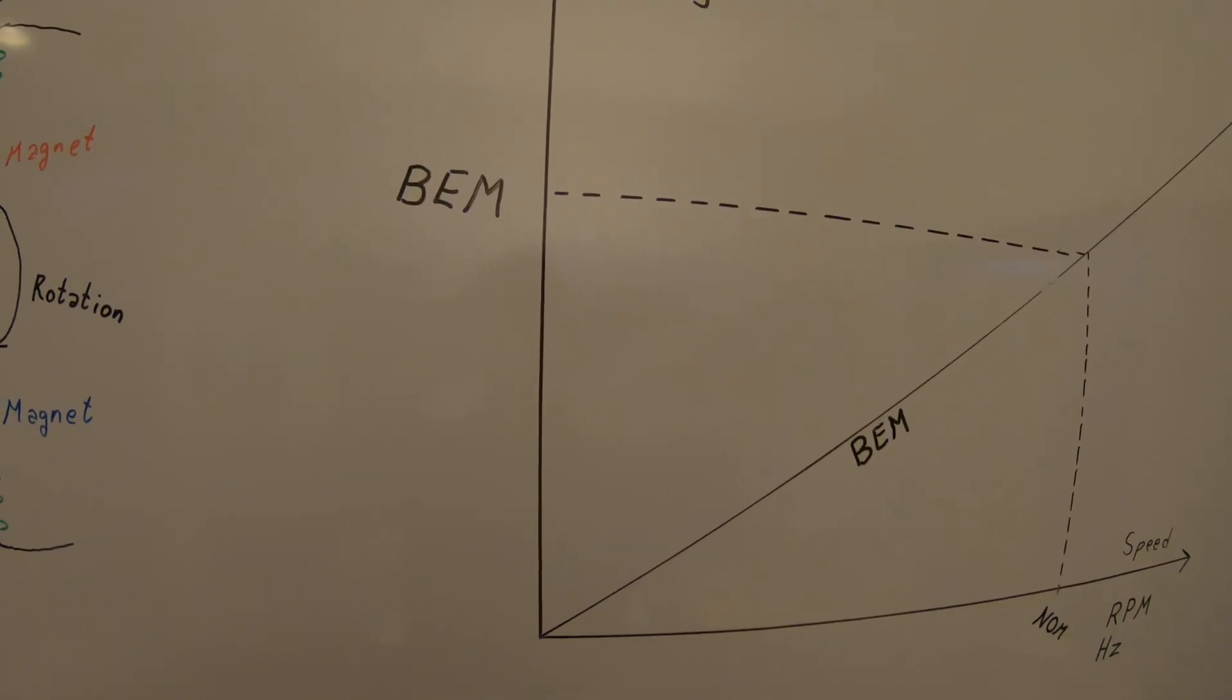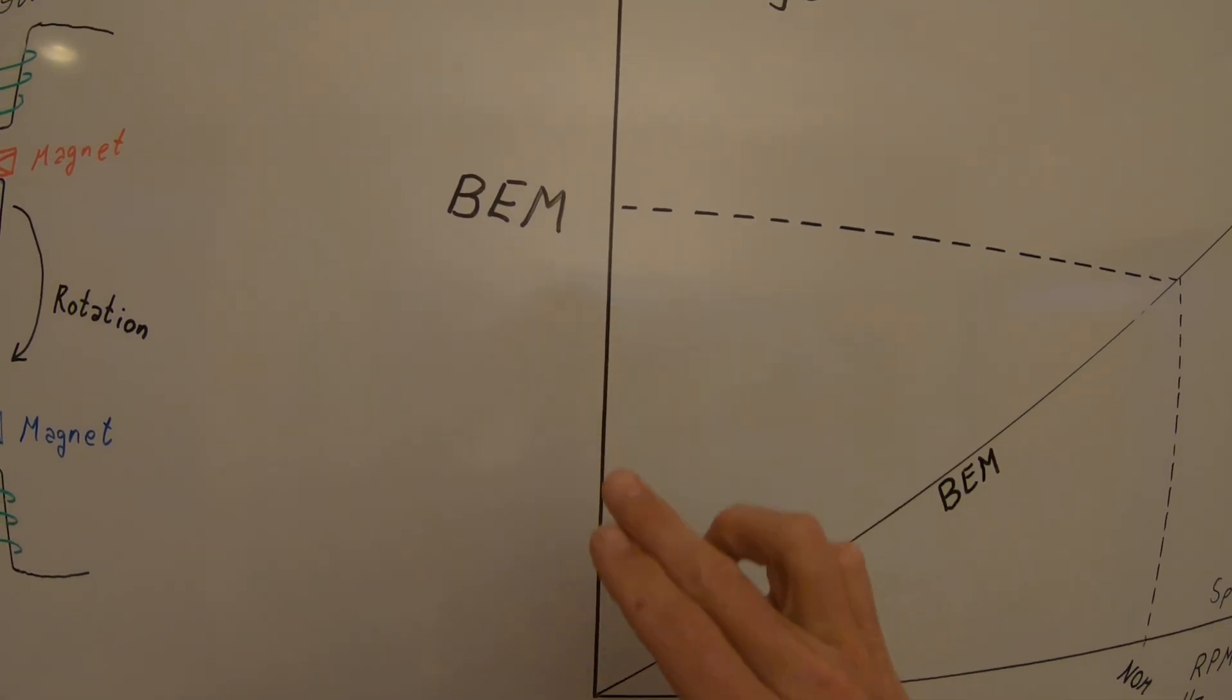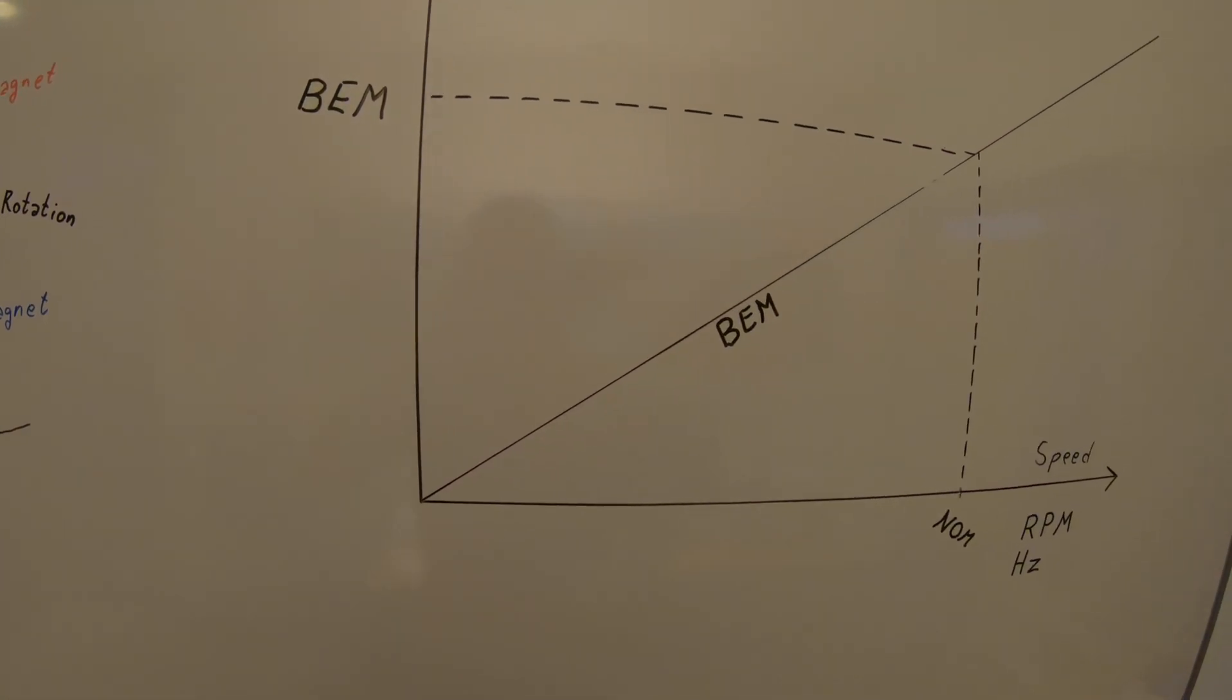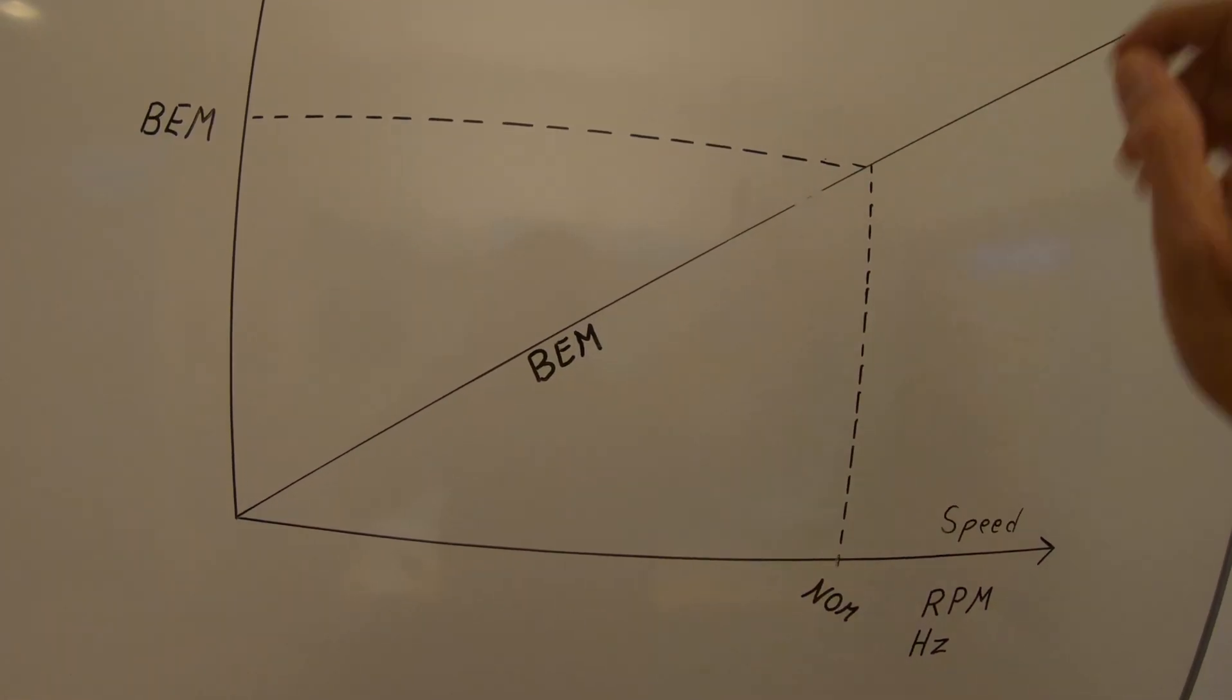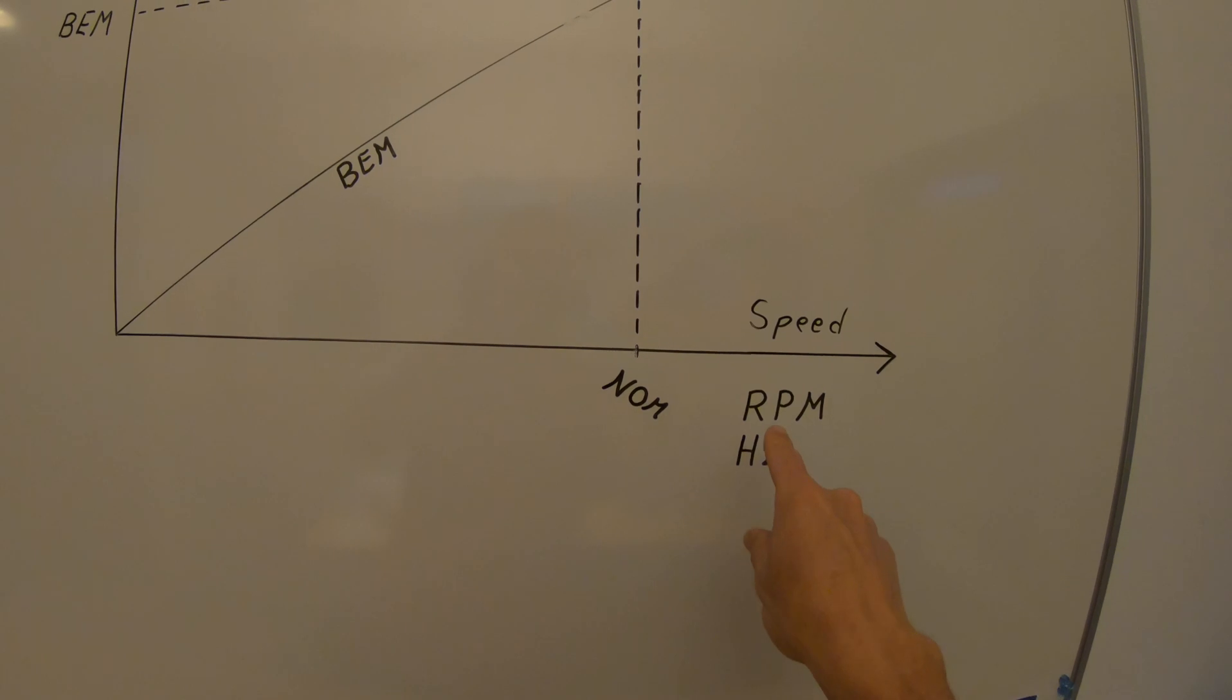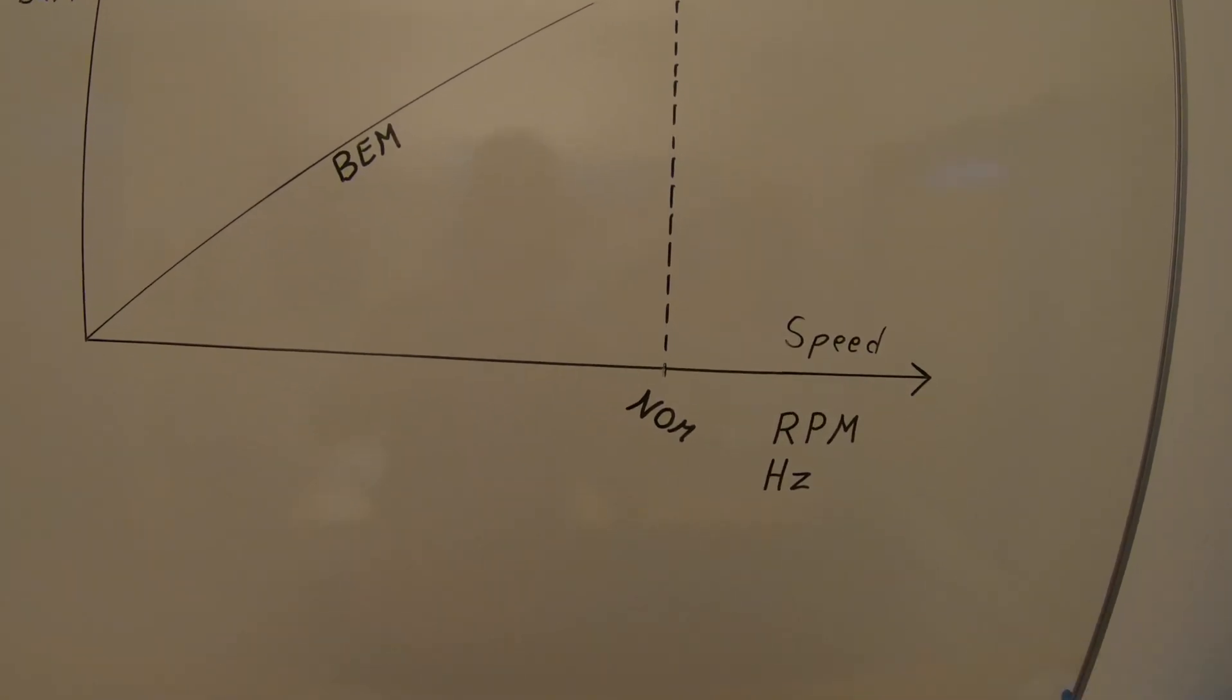This is called the back EMF voltage and every permanent magnet motor will have a specific back EMF voltage as function of its RPM or hertz which is exactly the same.